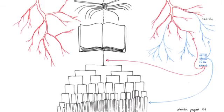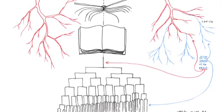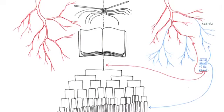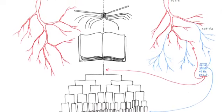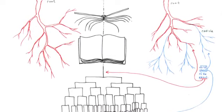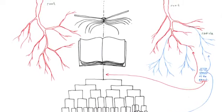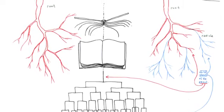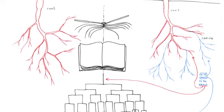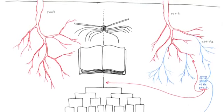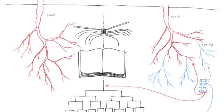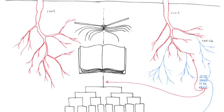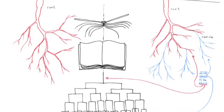The rhizome itself assumes very diverse forms, from ramified surface extension in all directions to concretion into bulbs and tubers. When rats swarm over each other, the rhizome includes the best and the worst. We get the distinct feeling we will convince no one unless we enumerate certain approximate characteristics of the rhizome.